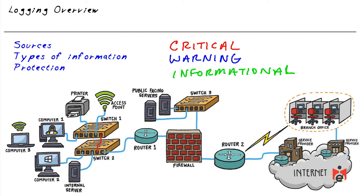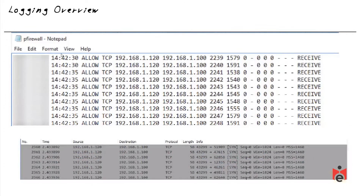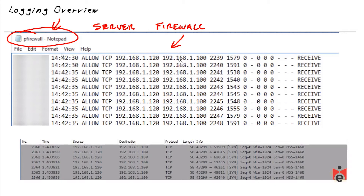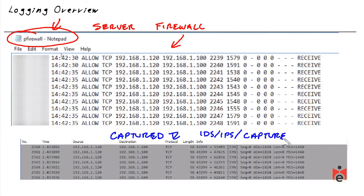We can often learn the same information from different logs. Let's look at two examples and ask: is there something malicious happening? We have a firewall log from a server (software firewall) and below that we have packet captures, which could be from an intrusion detection/prevention system or a protocol analyzer. Take a moment to consider whether either represents potentially malicious traffic.